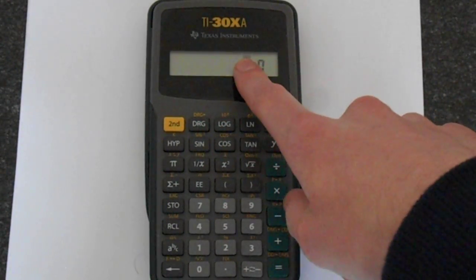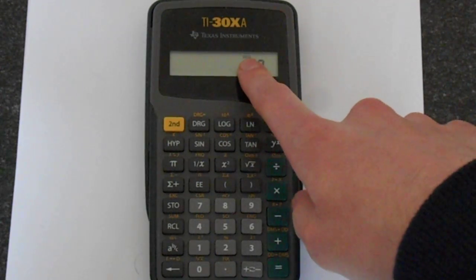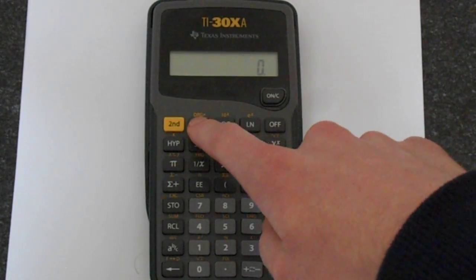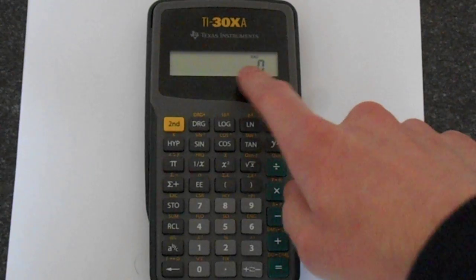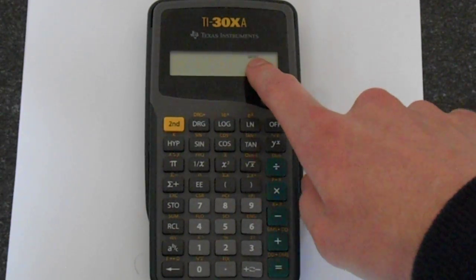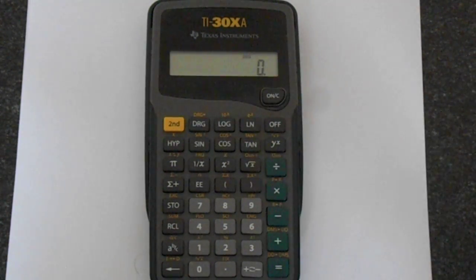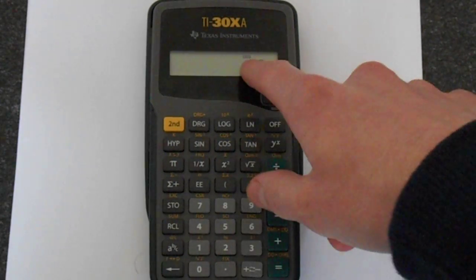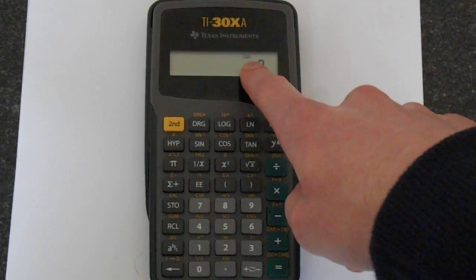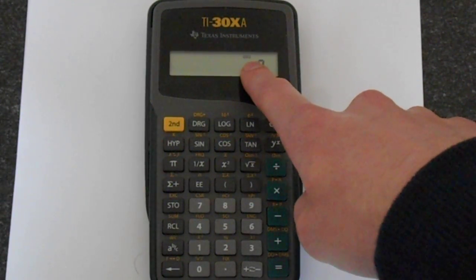Finally, you have to know how this works. We're currently in degrees. If we press this DRG button, we switch to radians. Press it again, puts us in gradients. Press it one more time, we're back to degrees. When you're working with trig, keep an eye on what this is. Otherwise, you're likely to get confused.